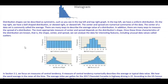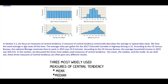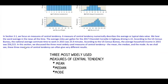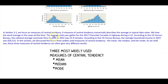The most appropriate measure of center and spread depends on the distribution shape. Once the shape, center, and spread are known, we can analyze the data for interesting features, including unusual data values called outliers. In section 3.1, we focus on measures of central tendency. A measure of central tendency numerically describes the average or typical data value.